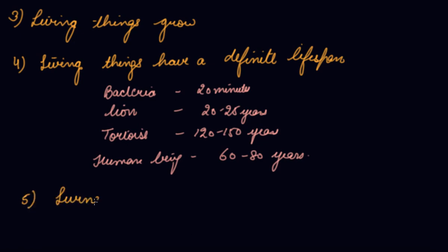Fifth characteristic: living things reproduce. Some animals and human beings give birth to young ones like themselves, whereas birds, snakes, and spiders lay eggs. After that, the eggs mature and turn into the particular animal or insect.